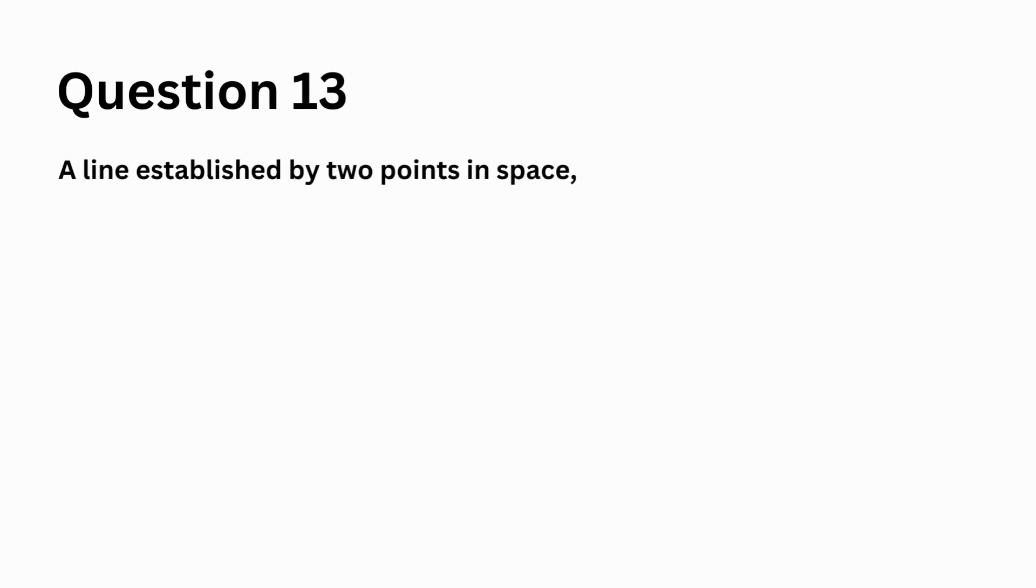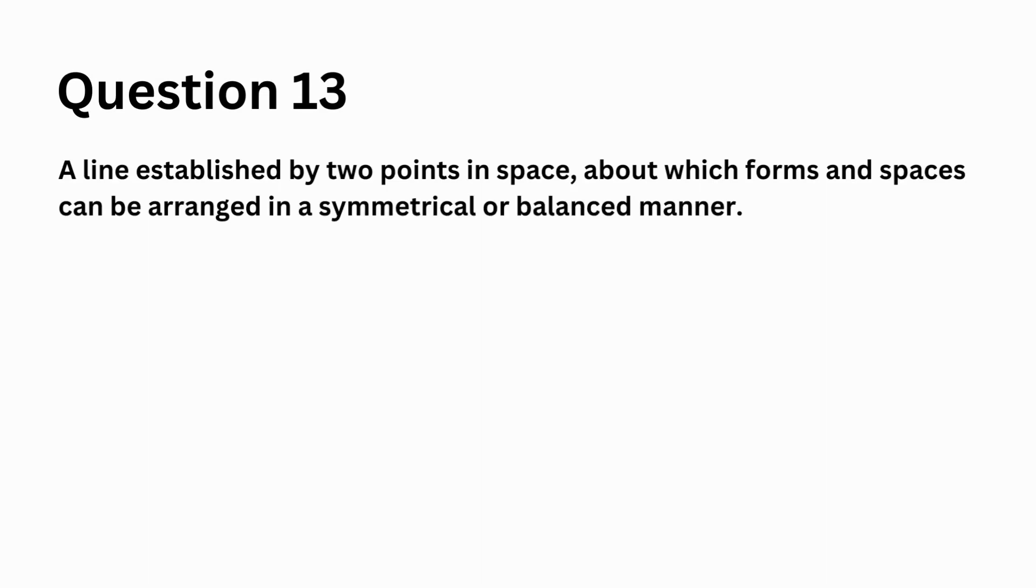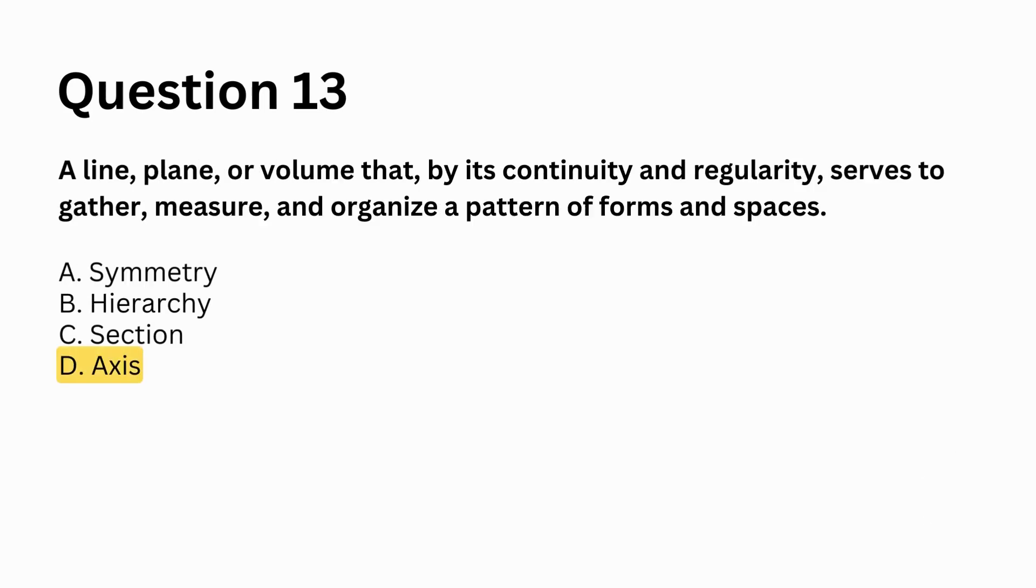A line established by two points in space about which forms and spaces can be arranged in a symmetrical or balanced manner. A. symmetry, B. hierarchy, C. section, D. axis. Answer: D. axis.